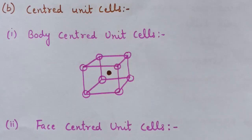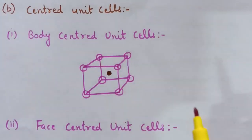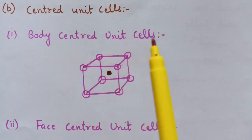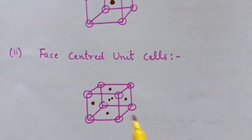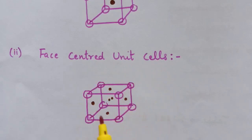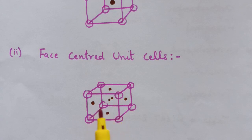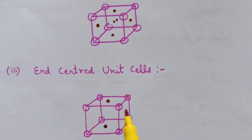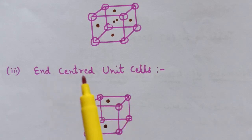In body centered unit cells, the constituent particles are present at all the corners and one particle is present at the center of the body. In face centered unit cells, particles are present at the corners as well as at the center of each face — in a cube there are six faces, so six particles are at face centers. In end centered unit cells, particles are present at corners as well as on two opposite faces.